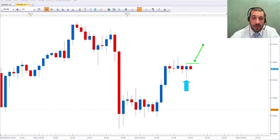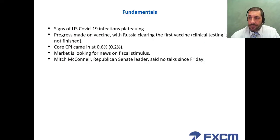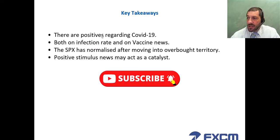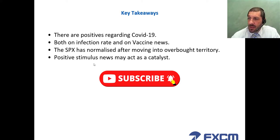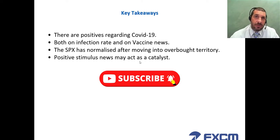Let's end with some key takeaways. There are positives regarding COVID-19, both on the infection rate and on vaccine news. The S&P 500 has normalized after moving into overbought territory. The market is now waiting on stimulus news, so any positive news on the fiscal package may act as a catalyst for demand — keep an eye out for that.